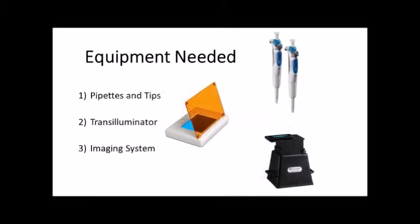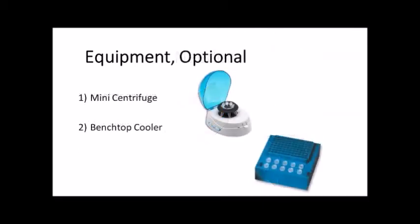Additional equipment needed includes pipettes and pipette tips, a transilluminator, and an imaging system if you want to take any pictures of your resulting gel. Some optional items include a mini centrifuge for spinning down small amounts of reagents, and a benchtop cooler for keeping temperature sensitive reagents cold on the lab bench.